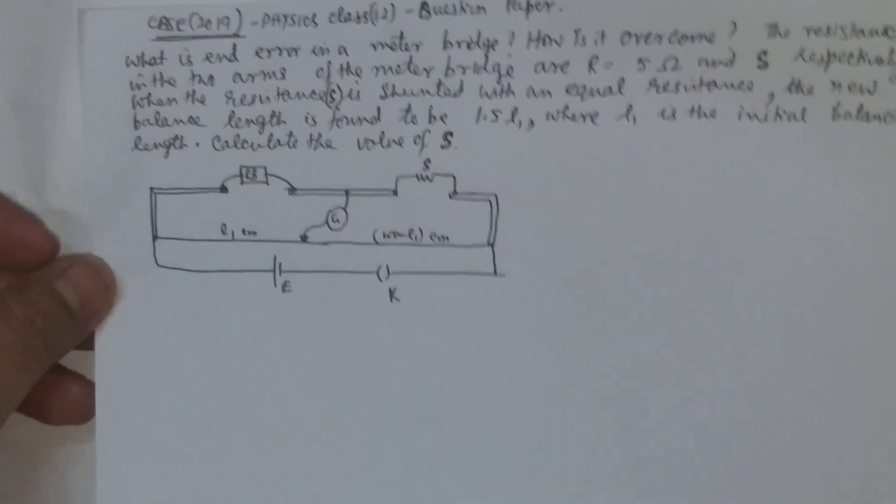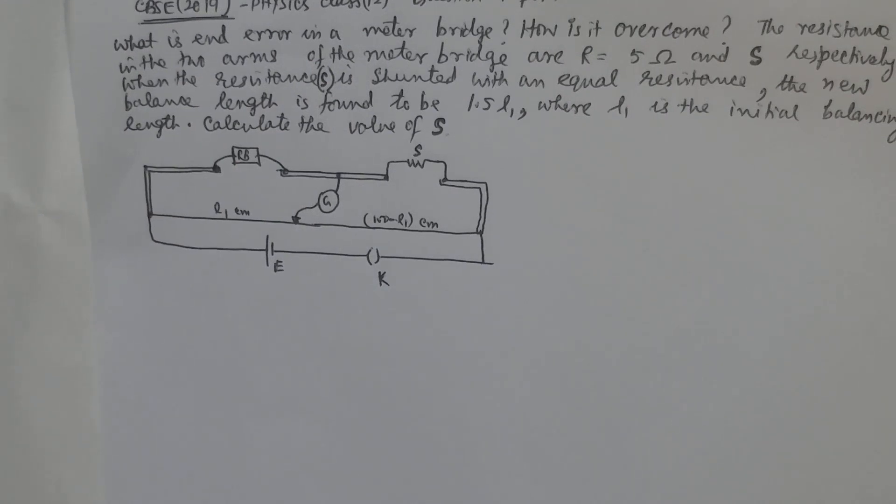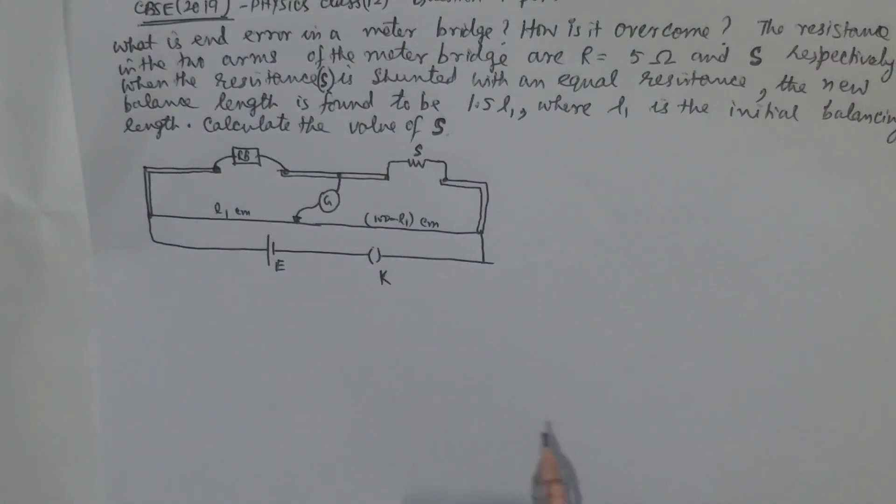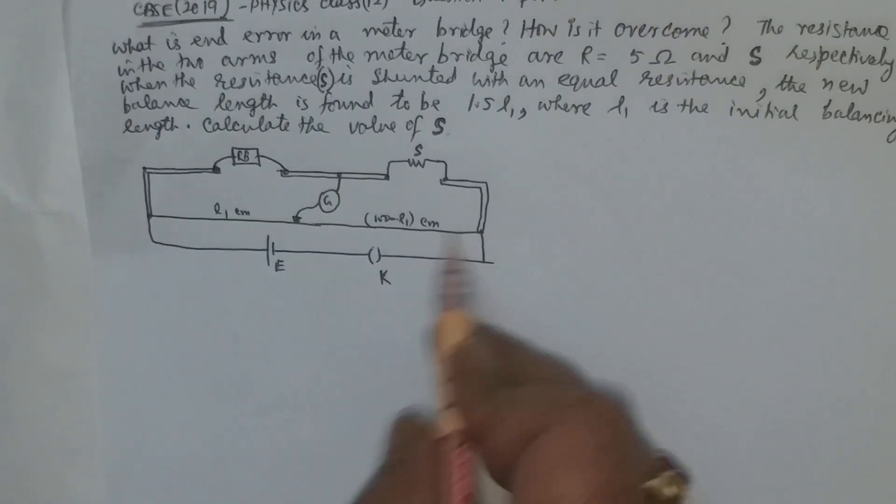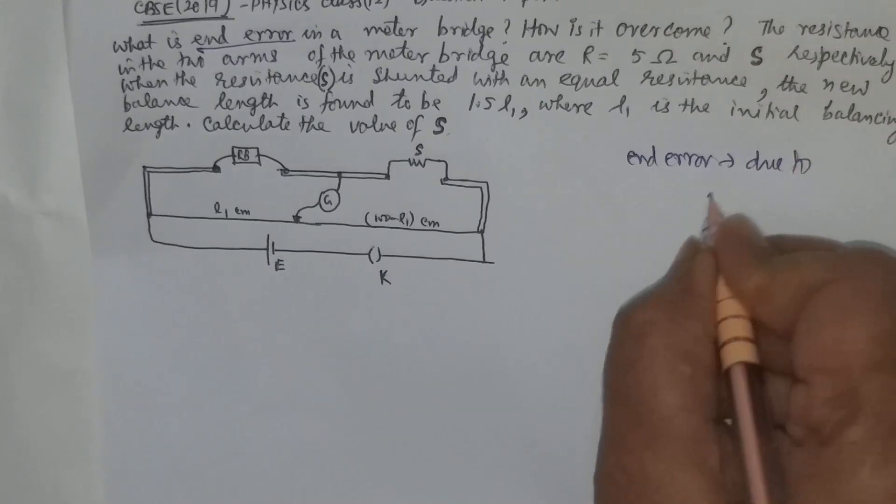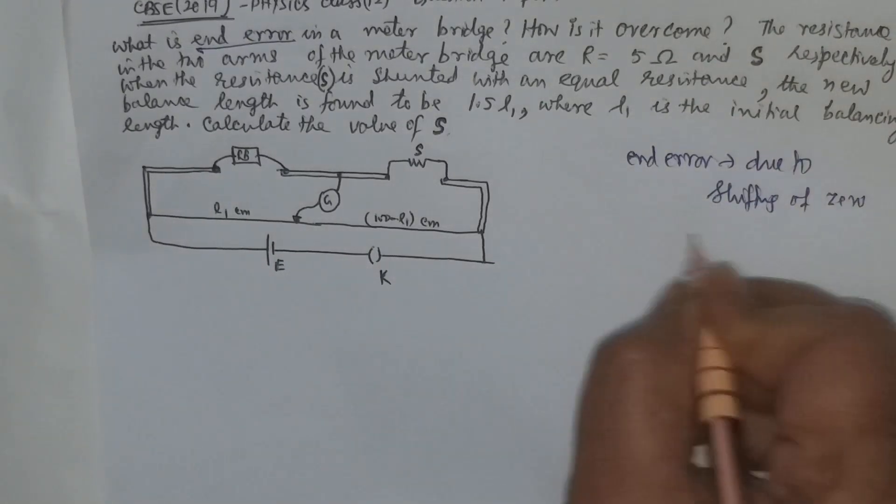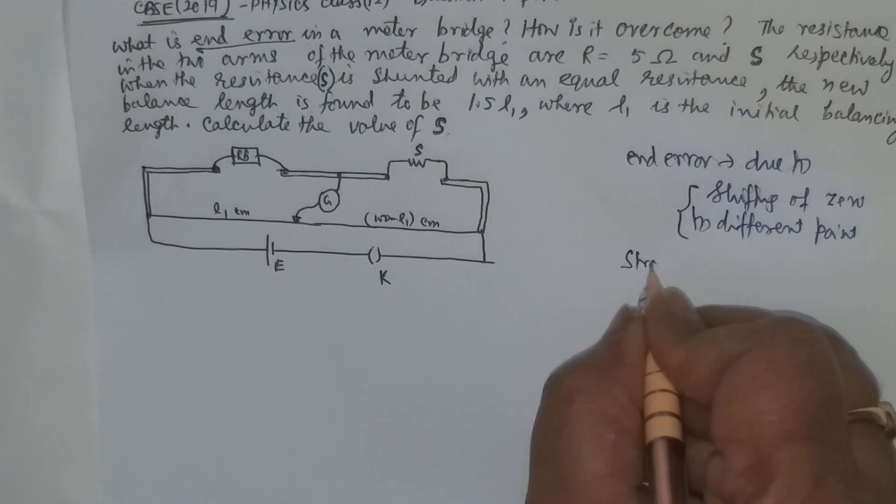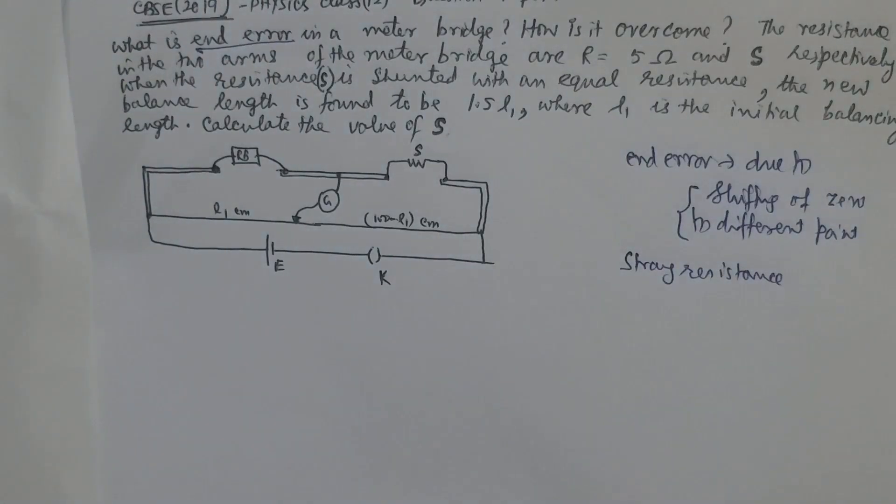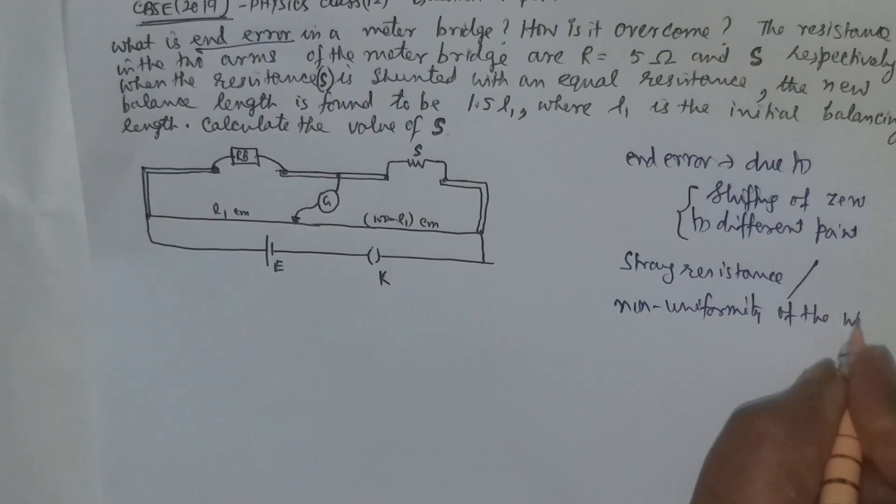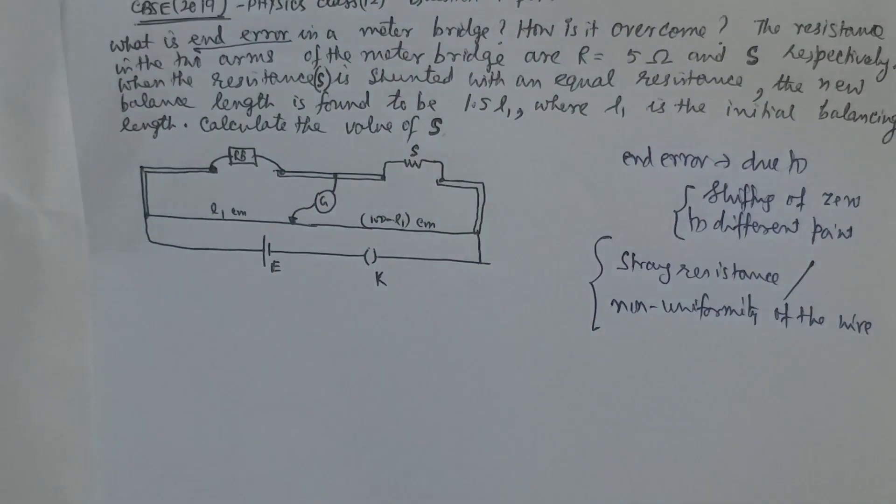What is end error in a meter bridge? End error is due to the small pieces of metal sheets attached here, due to which the actual zero of the scale shifts. The end error is due to shifting of zero to a different point. Another cause is stray resistance, meaning unwanted resistance in the joints, or non-uniformity of the wire. The wire is non-uniform due to these attachments at the ends. These cause the error in the measurement of resistance which is called end error.